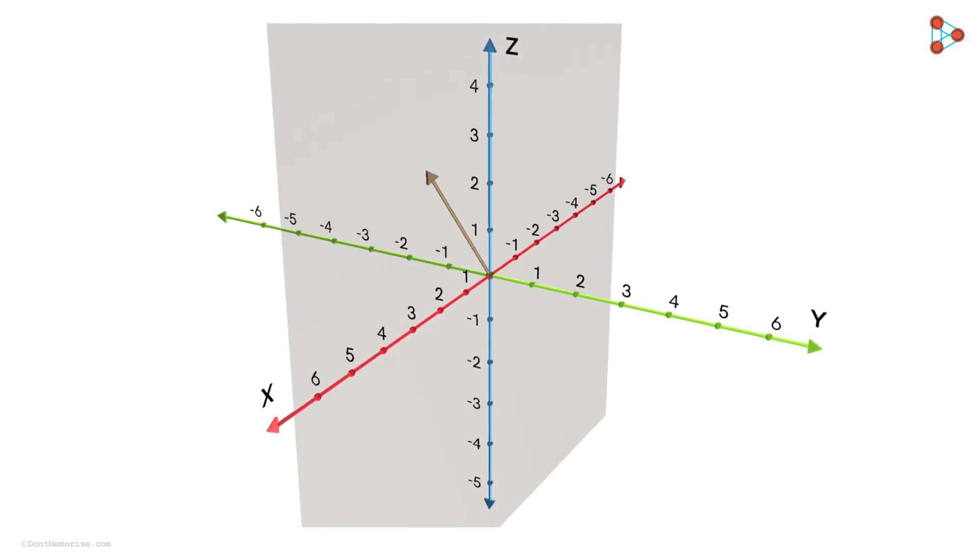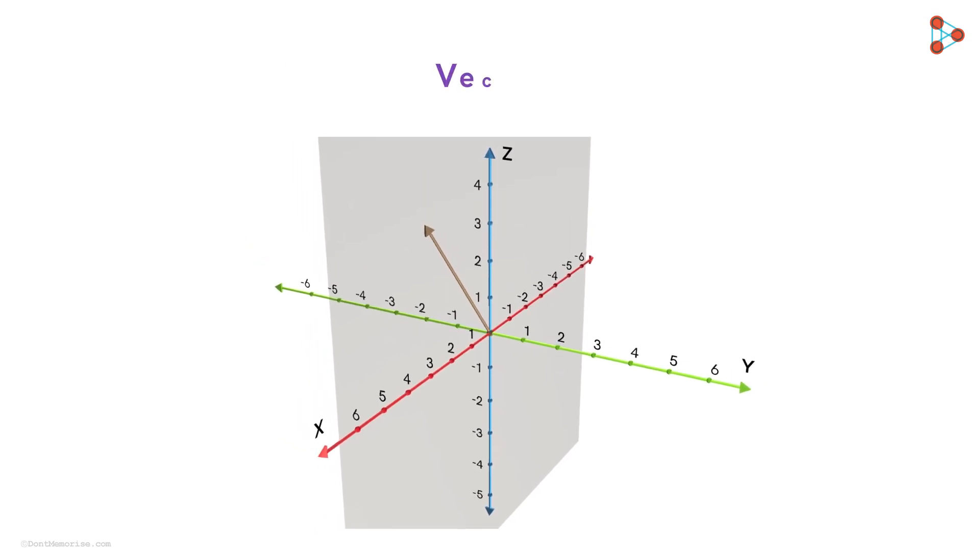Consider a vector in a three-dimensional coordinate system. Recall that a vector is a mathematical quantity that has magnitude as well as direction.